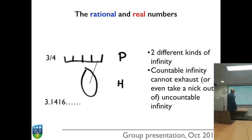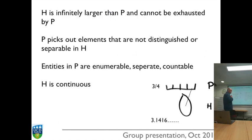We can enumerate, we can set up a scheme to enumerate all the rational numbers, but we can do no such thing for the real numbers. So no matter how many rational numbers we consider, they can never take a nick out of the set of real numbers. The set of real numbers is basically untroubled even if you pick out all the rational numbers. H is infinitely larger than P and cannot be exhausted by P.